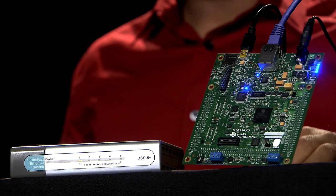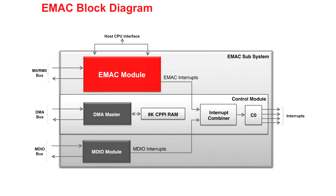The Ethernet Media Access Controller or EMAC and Management Data Input-Output or MDIO peripherals on TMS570 and RM48 devices provide a full-featured Ethernet interface. The EMAC peripheral conforms to the IEEE 802.3 standard, which specifies the Carrier Sense Multiple Access with Collision Detection Access Method or CSMACD and physical layer specifications. The EMAC supports 10BASE-T at 10 Mbps and 100BASE-TX at 100 Mbps in both half-duplex and full-duplex modes. The EMAC control module provides an interface from the CPU to the EMAC and MDIO modules, controls device interrupts, and incorporates an 8KB internal RAM to hold EMAC buffer descriptors, also known as CPPIRAM.